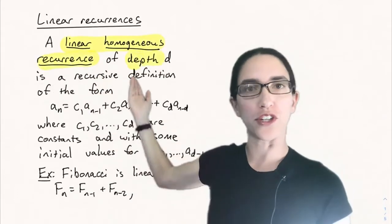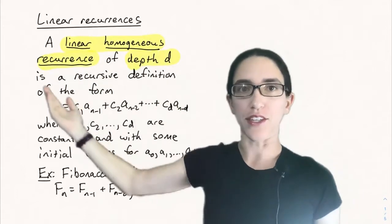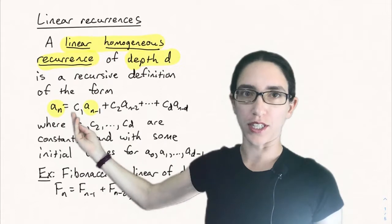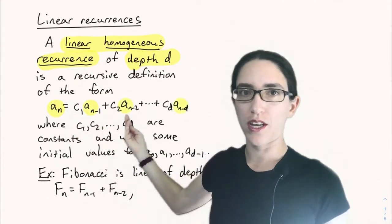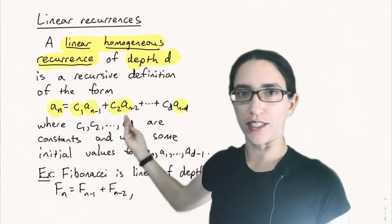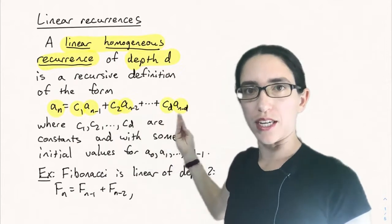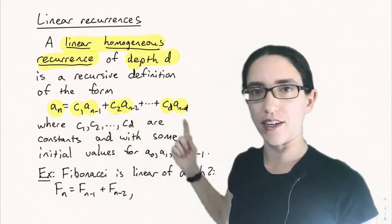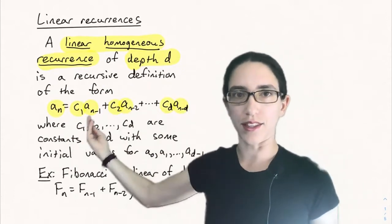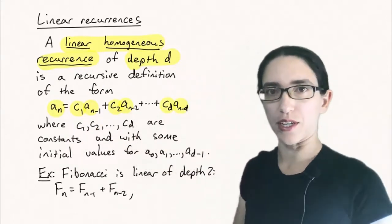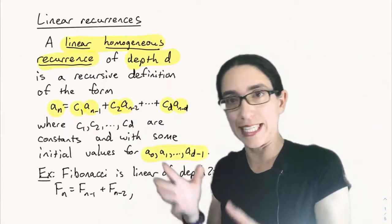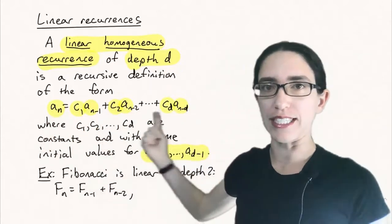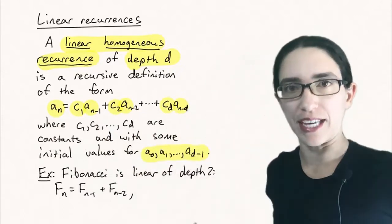A linear homogeneous recurrence of depth d is a recursive relation of the form a_n equals some constant c1 times a_{n-1} plus some constant c2 times a_{n-2}, down to c_d times a_{n-d}, where c1 through c_d are constants. You're expressing a_n in terms of the previous d terms of the sequence, and that's why it's depth d.